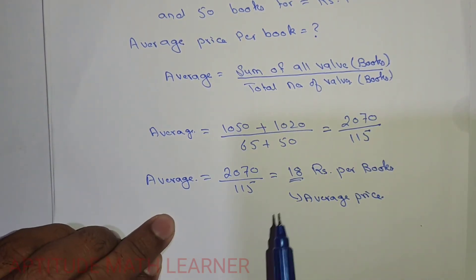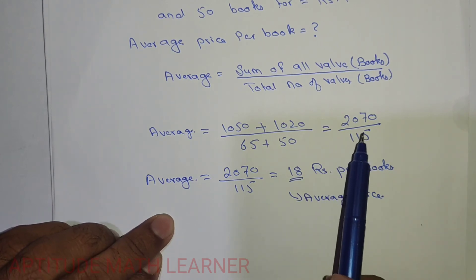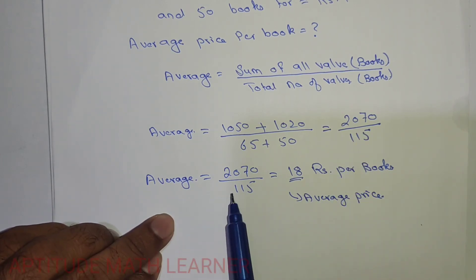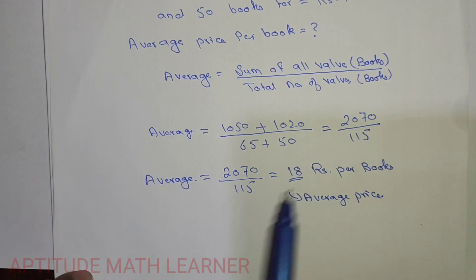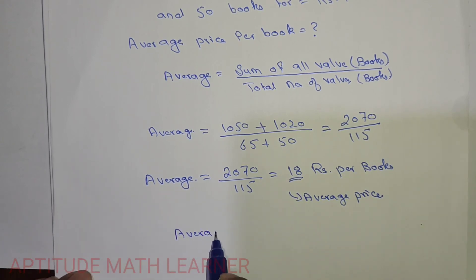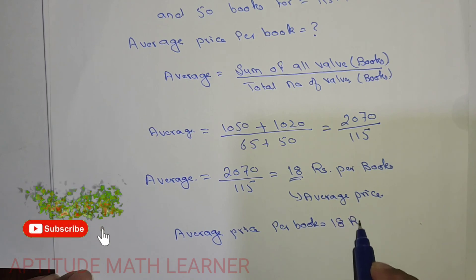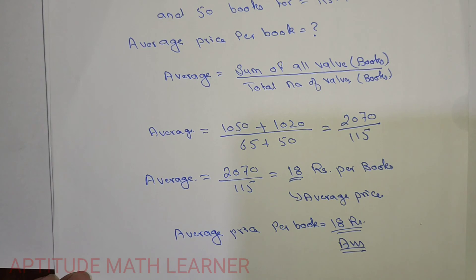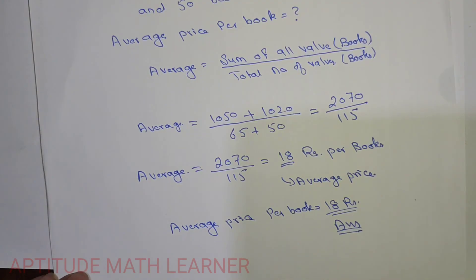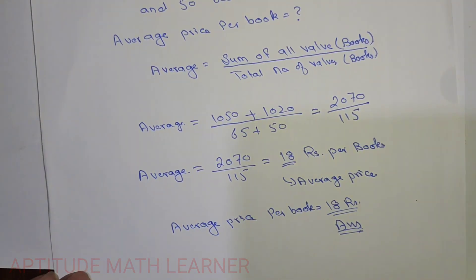Hope you have understood. That is our average. We have just divided 2070 upon 115 and we got the answer 18. So average price per book, that is 18 rupees. That is our answer. Hope you have understood the question. Please like and share and subscribe as well. Thank you very much.